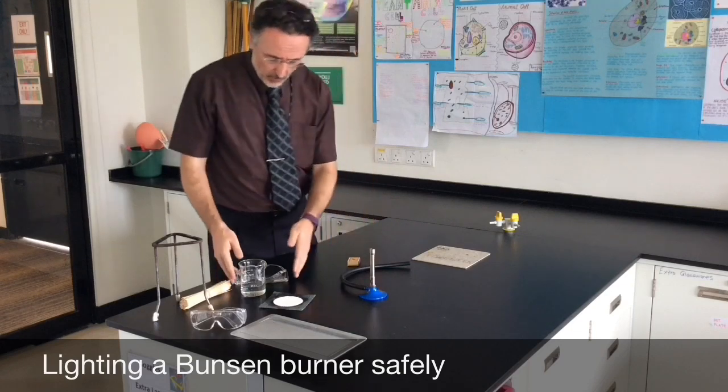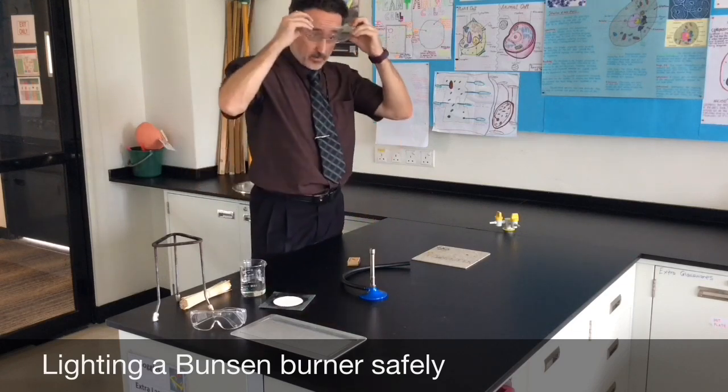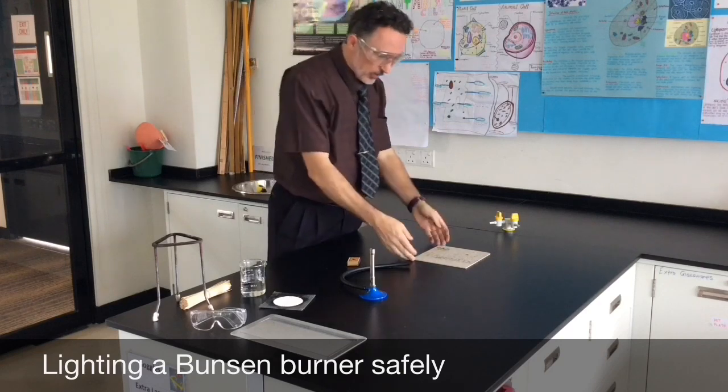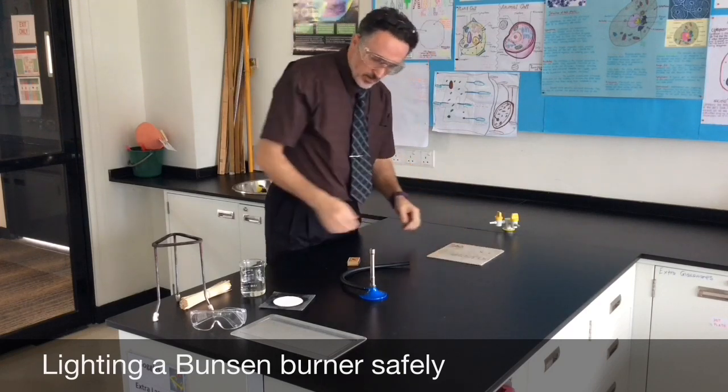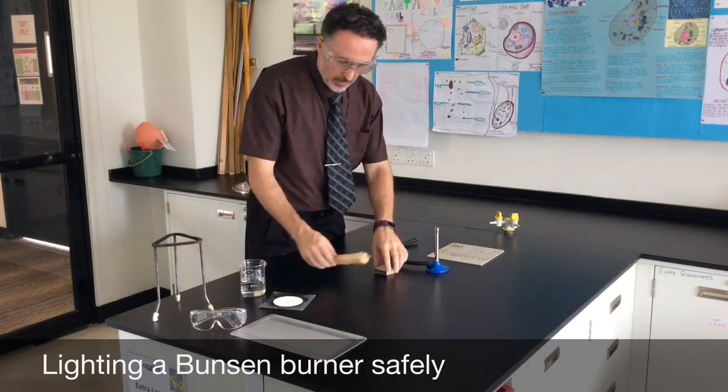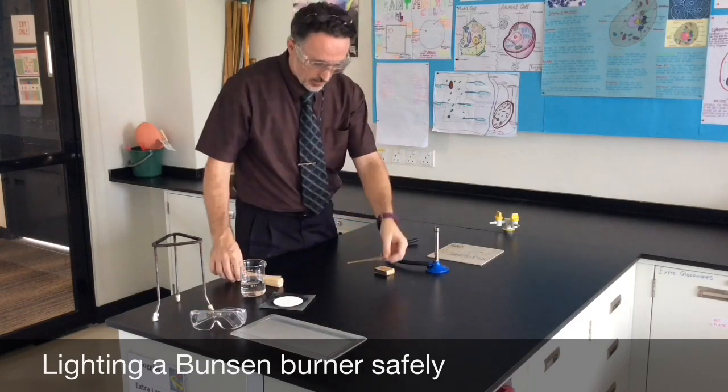What do we need? First of all, safety. Put your goggles on. Even though I'm wearing glasses, I still wear my goggles. We need a heatproof mat to protect the table. Here's your Bunsen burner, matches, and we need a wood splint.